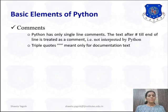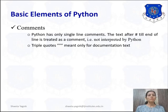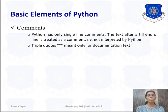Python uses the hash symbol to write a comment. Comments are not interpreted by the interpreter. Triple quotes are used only for documentation text. For general-purpose comments in programs, we use the hash symbol to comment a specific line.